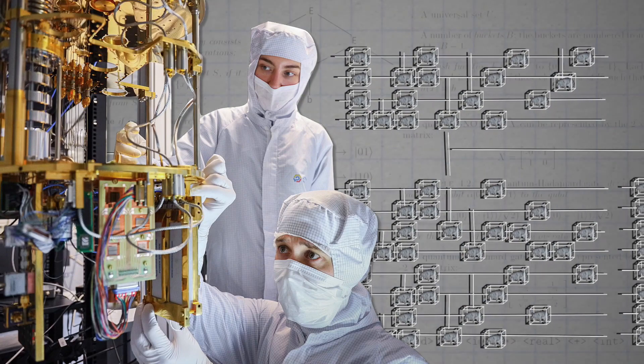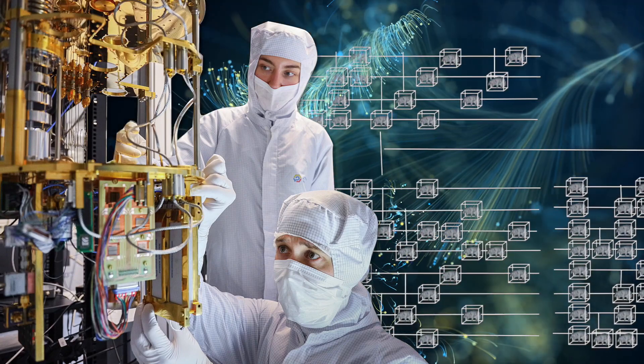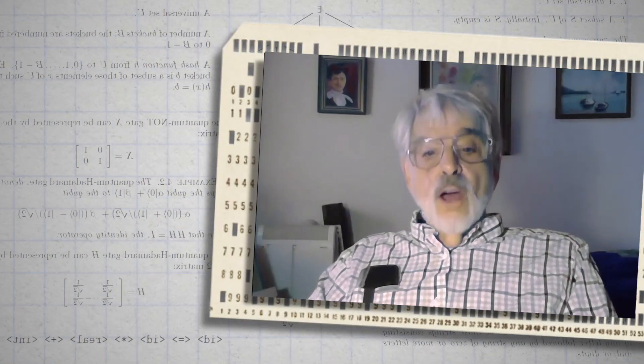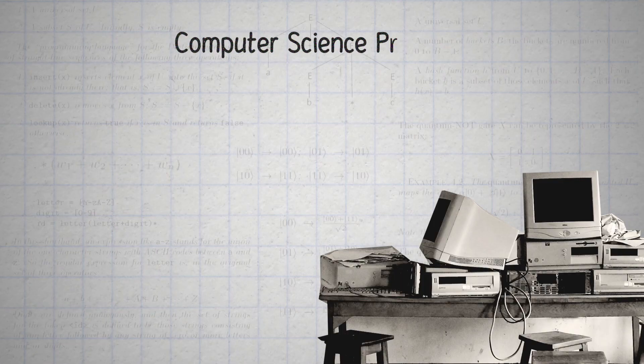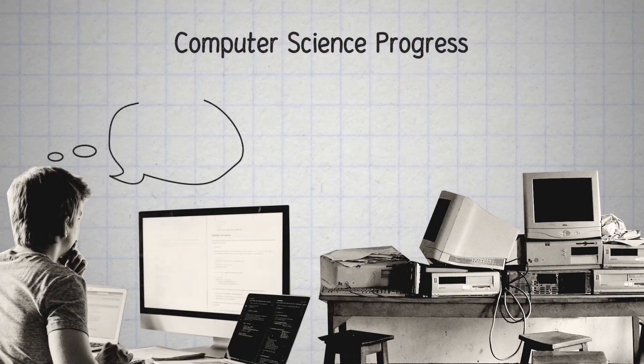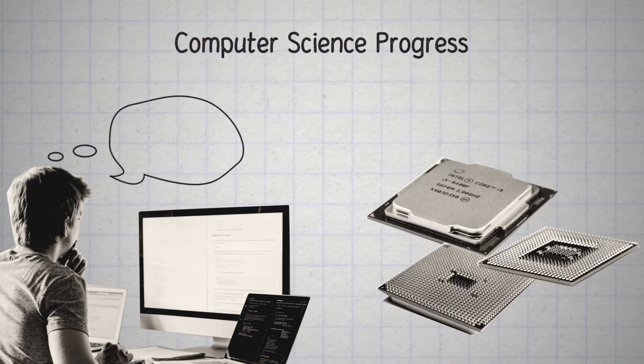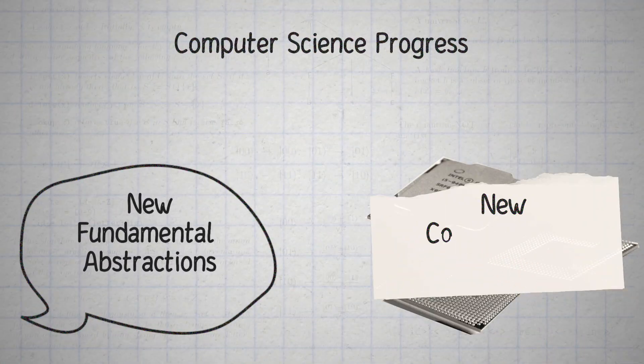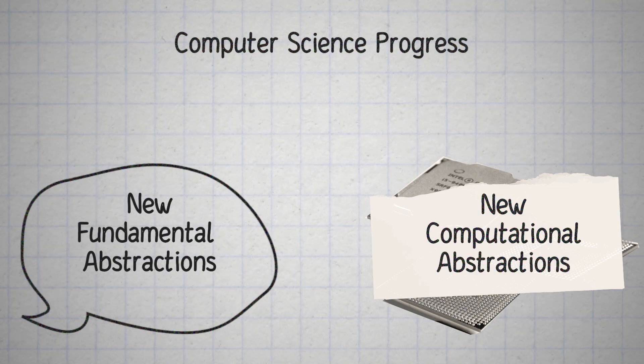Let's think about how the two big external drivers of computer science progress are evolving. You have new applications on the demand side and new developments in hardware on the supply side. These suggest new fundamental abstractions and new computational abstractions, which in turn encourage computer scientists to invent new abstract implementations and new declarative abstractions.